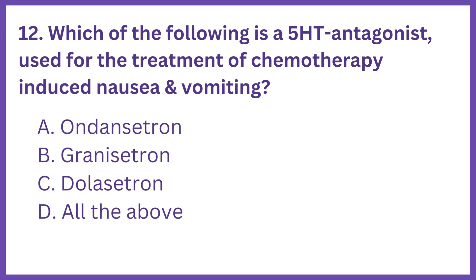Which of the following is a 5-HT antagonist used for the treatment of chemotherapy-induced nausea and vomiting? Option A: Ondansetron. Option B: Granicetron. Option C: Dolacitrin. Option D: All the above.